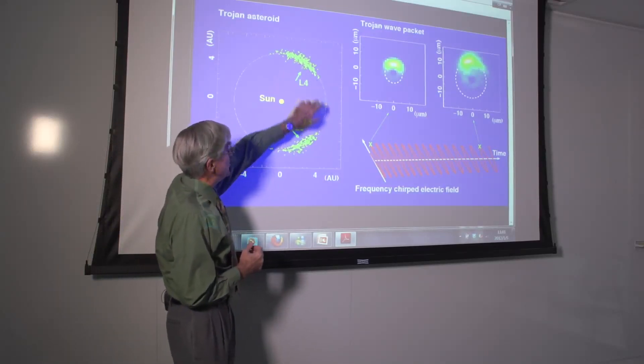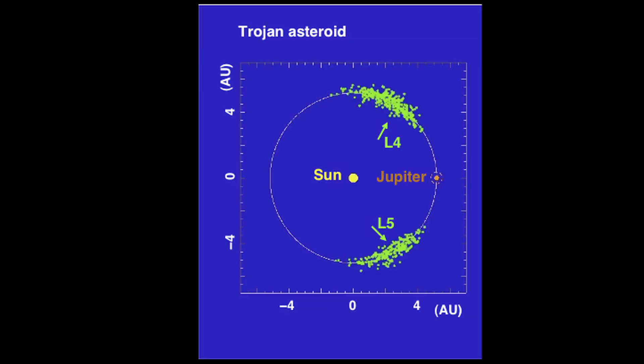The Trojan asteroids are shown here. They're trapped in the combined gravitational potential of the Sun and Jupiter, and orbit with the planet 60 degrees ahead and 60 degrees behind.